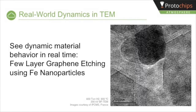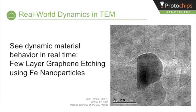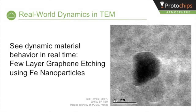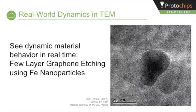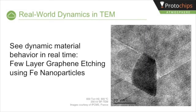If a sample is exposed to just the right conditions, important dynamic reactions occur, such as in the video shown here, where few-layer graphene is etched using iron nanoparticles. When heated to 900 degrees Celsius under 600 torr of hydrogen, iron reacts with and etches the graphene lattice, creating trenches along specific orientations of the graphene crystal lattice. The video shows the dynamics of this reaction, including which facets of the iron nanoparticle etched the graphene and the direction of etching.